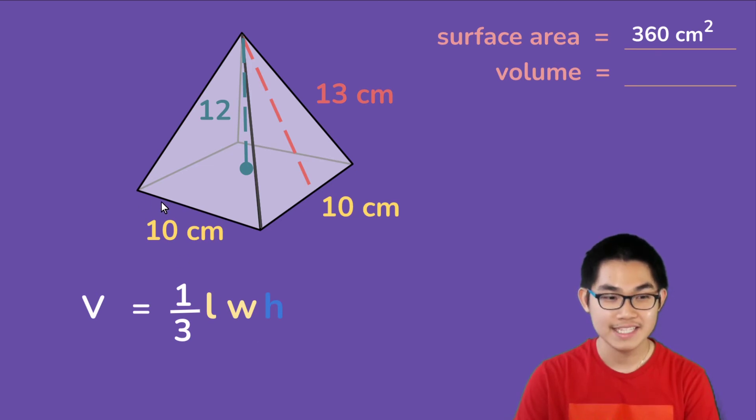So the length is 10, the width is also 10, so 10 times 10 gives you 100, and the height is 12. So 12 times 1 over 3 gives you 4, and 4 times 100 is 400. And so the volume of this pyramid is 400 centimeters to the power of 3.